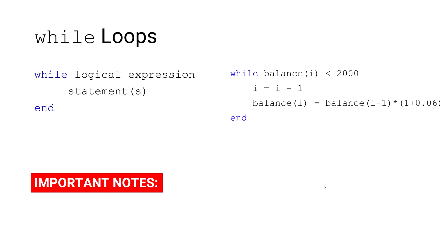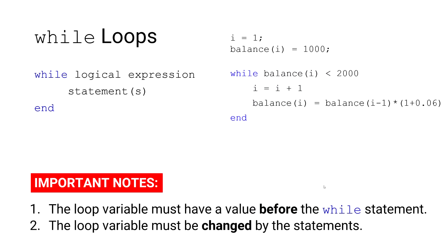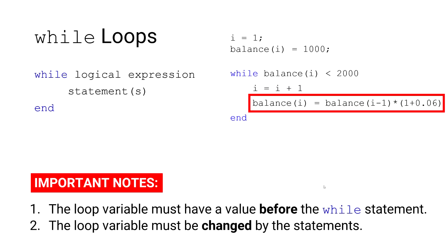I'd like to make two important notes when working with while loops. The first is that the loop variable must have a value before the while statement. In this case, balance is our loop variable — if it does not have a value before the logical expression, the expression cannot be evaluated. The second note is that the loop variable must also be changed by the statements. If our balance's value does not change, it remains $1,000, which is never less than $2,000, and our while loop would run indefinitely — we'd have an infinite loop.